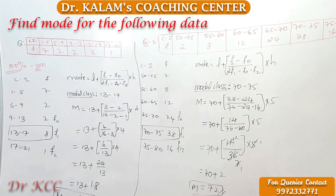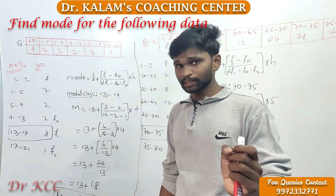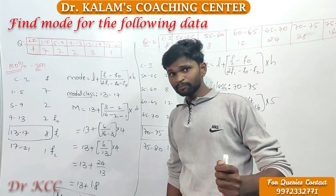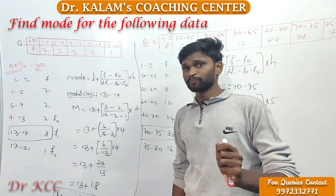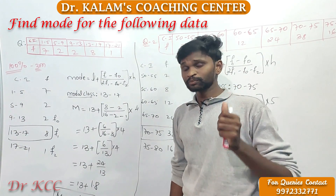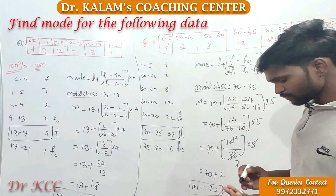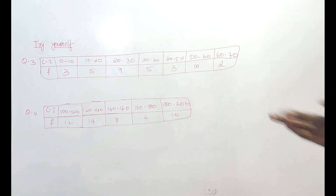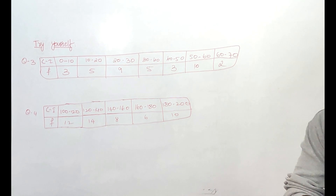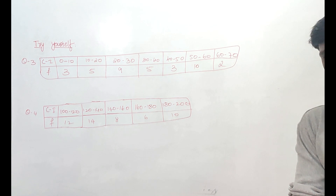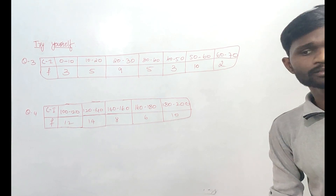To verify: your modal class was 13 to 17, so your answer should be between 13 and 17 — and you got 14.8, which is correct. For the second question, modal class is 70 to 75 and answer is 72, which lies in that range — correct. These are the two questions I solved. The definition of mode is the data which repeats for the highest number of times. I will give you two questions as an assignment — try them and comment your answer below. Take a screenshot of the board questions and we will go to the next concept.